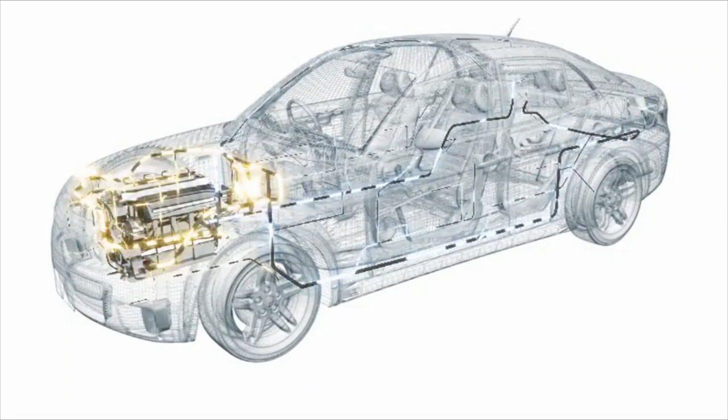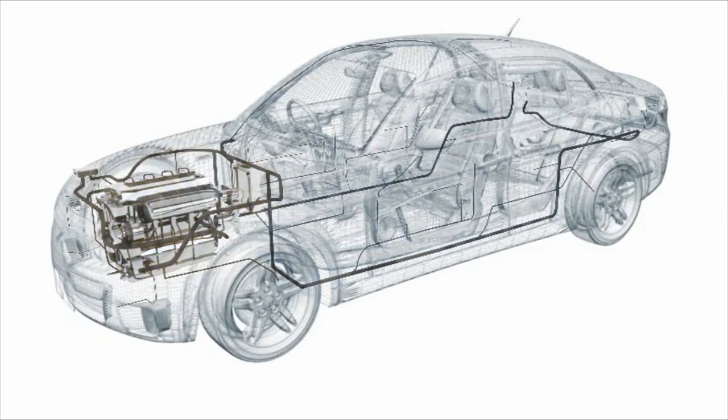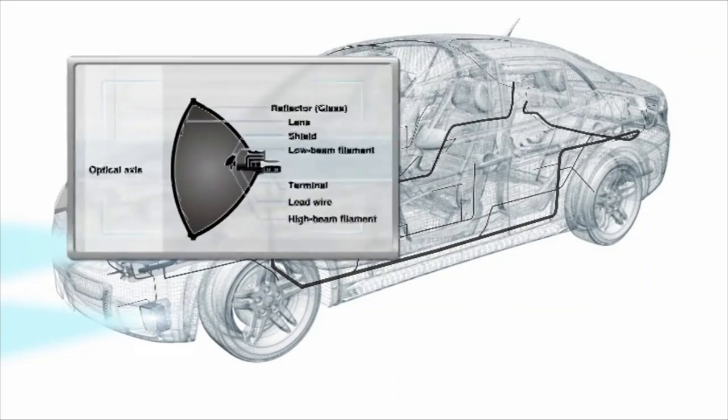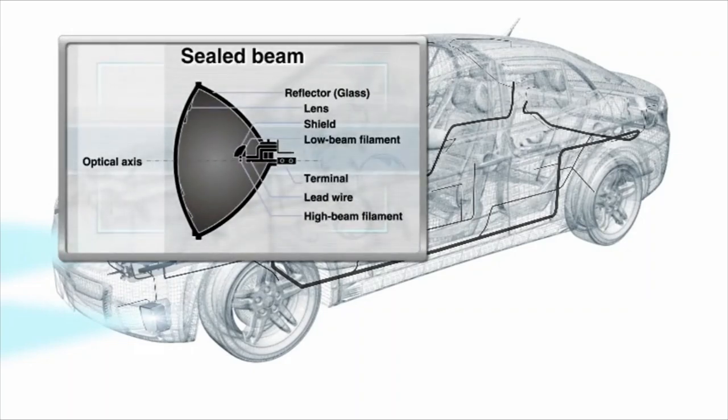Effective lighting systems enhance visibility in the dark, contributing to safer driving under low light conditions. A sealed beam style lamp is a single assembly of filament, reflector, and lens that is filled with an inert gas like argon.